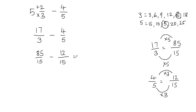Now we can go ahead and subtract the fractions. When the denominators are equal, all we need to do is subtract the numerators. So 85 minus 12 gives me 73. We never subtract the denominators, so the denominator stays as 15.